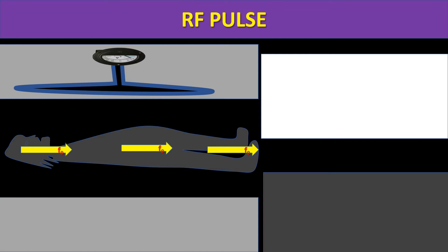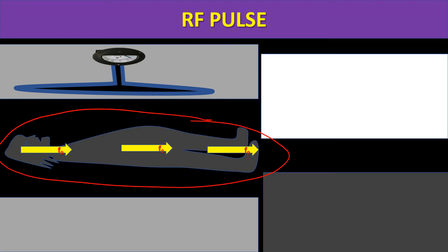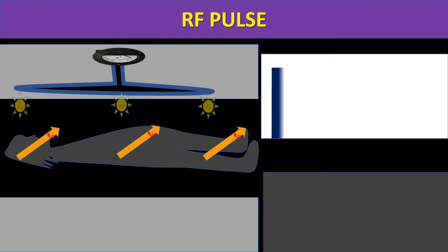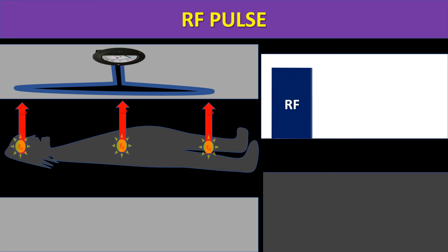To measure this frequency produced by the human body, we give an RF pulse. Once we give the RF pulse, it will flip the magnetic field 90 degrees so that we can measure it. Why all this happens has been explained in the previous classes.